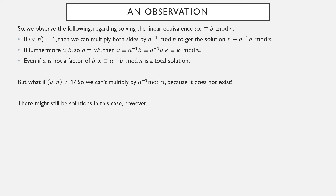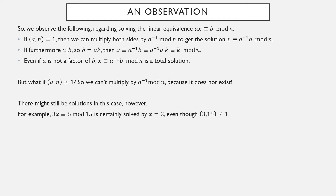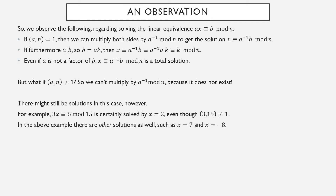Just because a and n are not relatively prime doesn't mean there are no solutions to find — it only means that that method won't work. For example, 3x ≡ 6 mod 15 is still certainly solved by x = 2, since 6 = 6, but 3 and 15 are definitely not relatively prime. Even though the coefficient 3 and the base 15 are not relatively prime, there were still solutions to find. There are actually other solutions as well — you can check that x = 7 or x = negative 8 also solve 3x ≡ 6 mod 15.